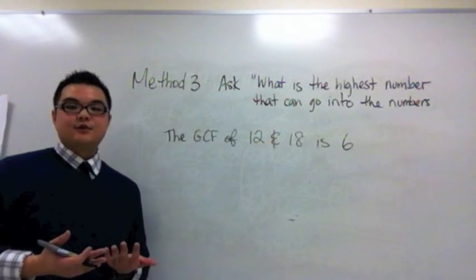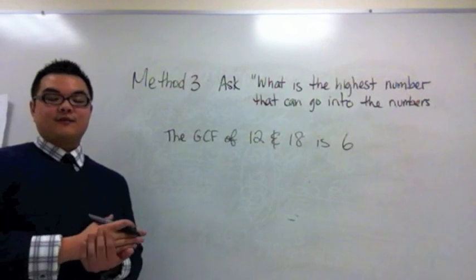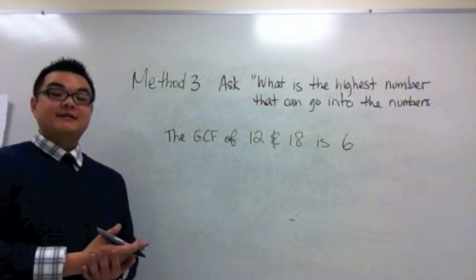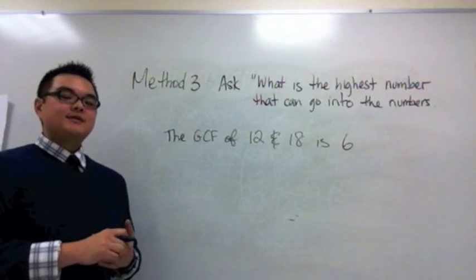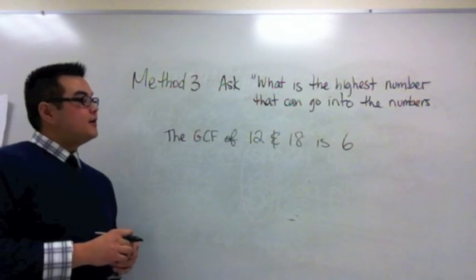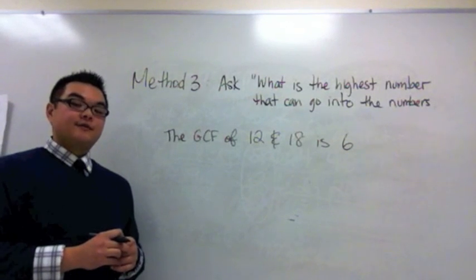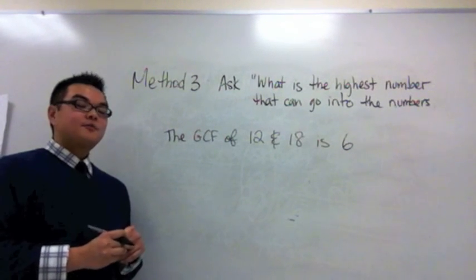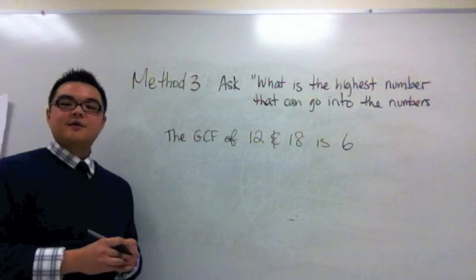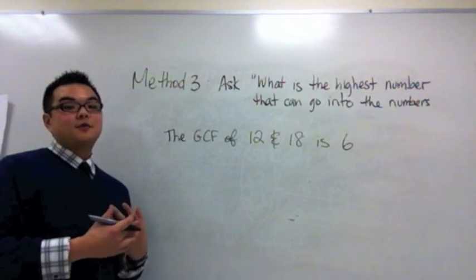Of all the three methods that I have shown, any method will work. The first method is the longest because you have to list all the factors, the second one is a shortcut using the ladder method, and the last one is using a little brain power to figure out what number goes into all of them. You can try now with the other previous examples and see if you can come up with a GCF and see if this method works best for you.